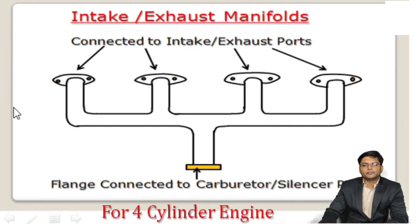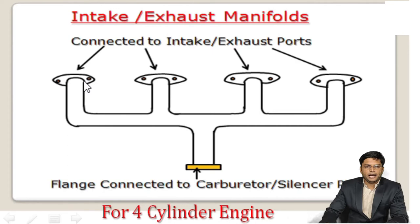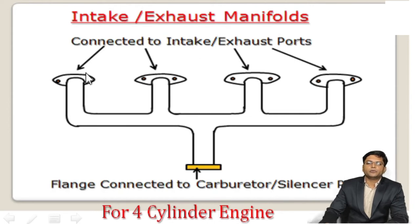This is the image of the intake and exhaust manifold. The intake and exhaust manifolds have a similar structure, as shown in this figure. This manifold is for four cylinders. If it is an intake manifold, it is connected to the nearby intake valve of the cylinder head, and the last connection or plane is connected to the carburetor. If it is an exhaust manifold, these ends are connected to the nearby exhaust valve, and this plane is connected to the silencer pipe.